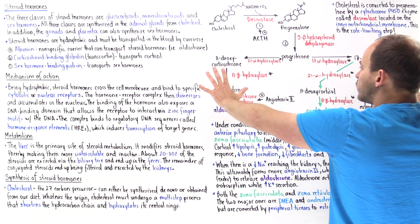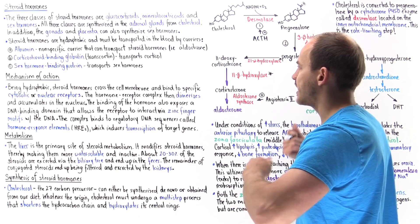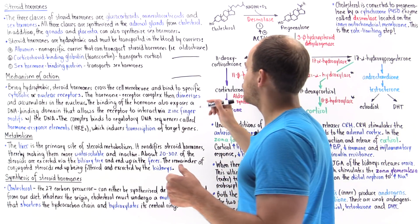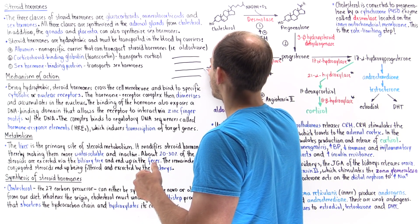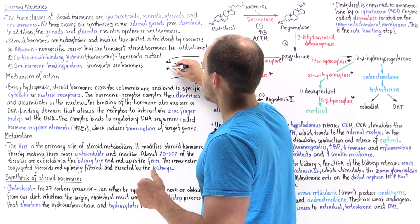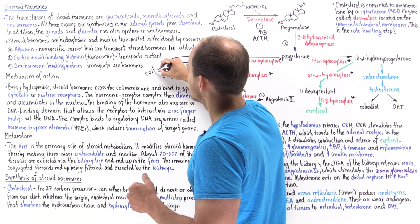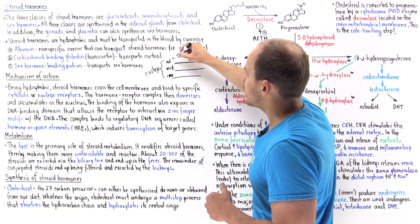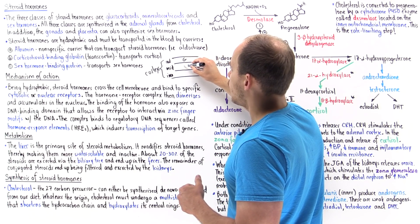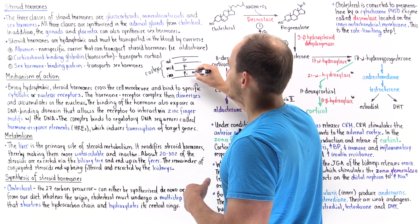The pathway that occurs depends on where we are within the adrenal cortex, which is divided into three regions: the outer region, the middle region, and the inner region. The outer region is also known as the zona glomerulosa, the middle region is the zona fasciculata, and the inner region is the zona reticularis.